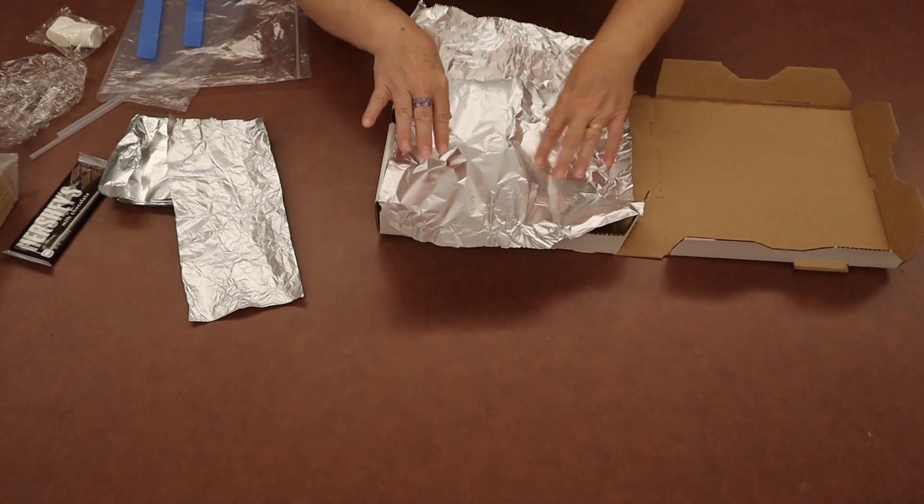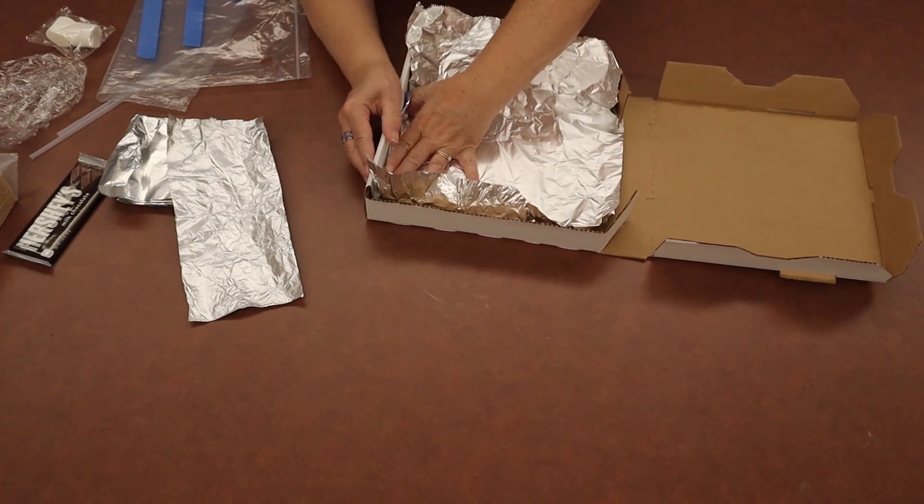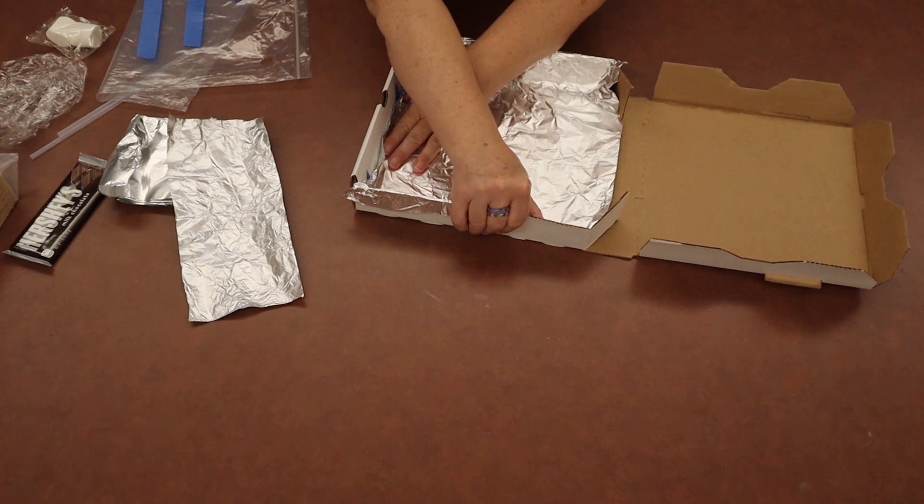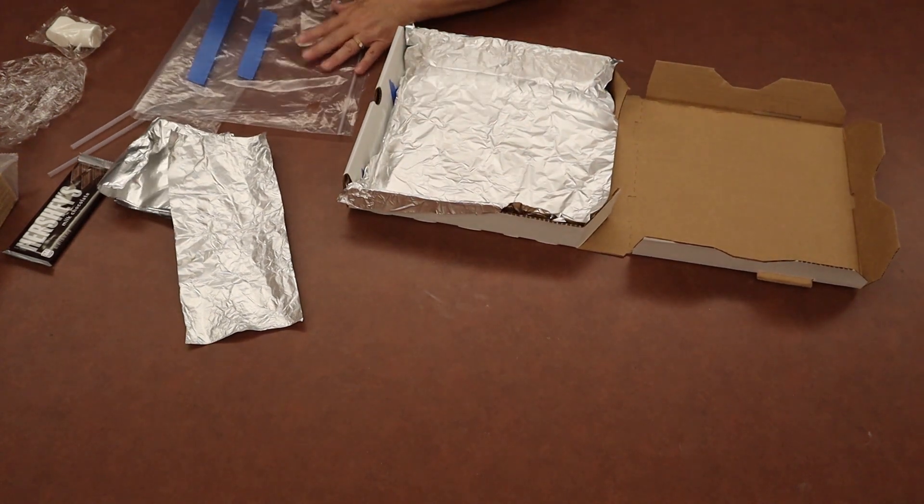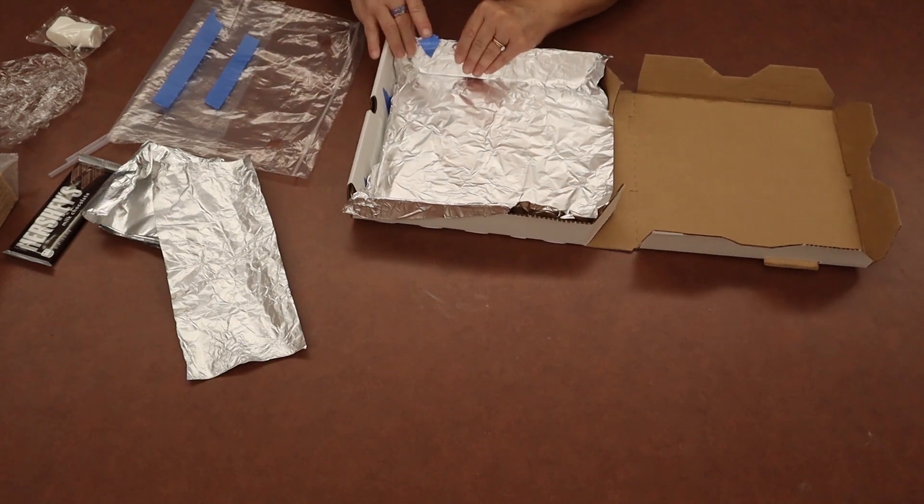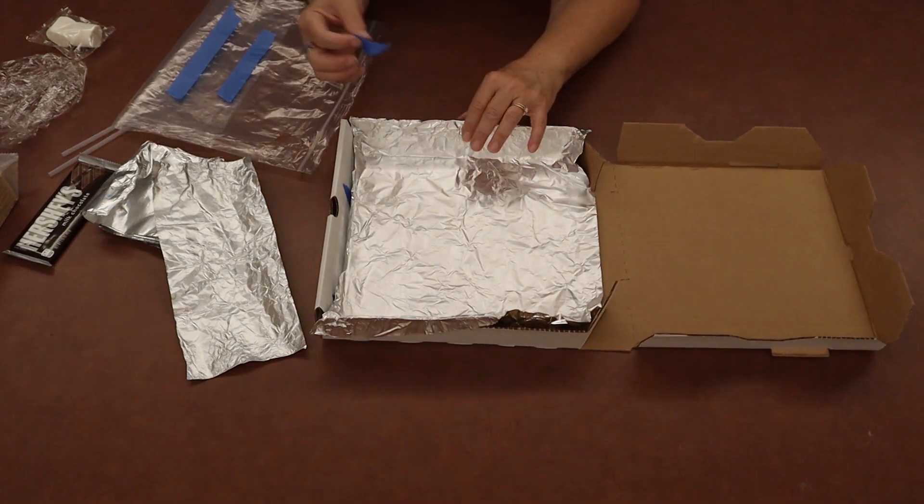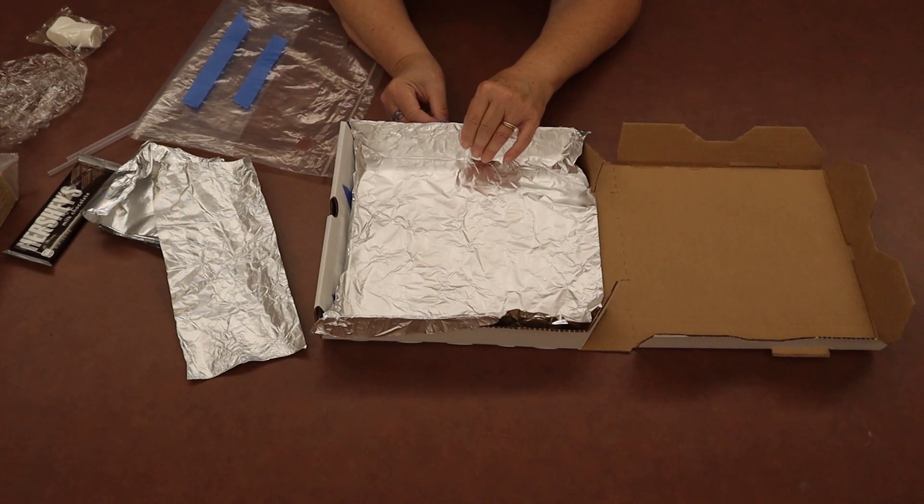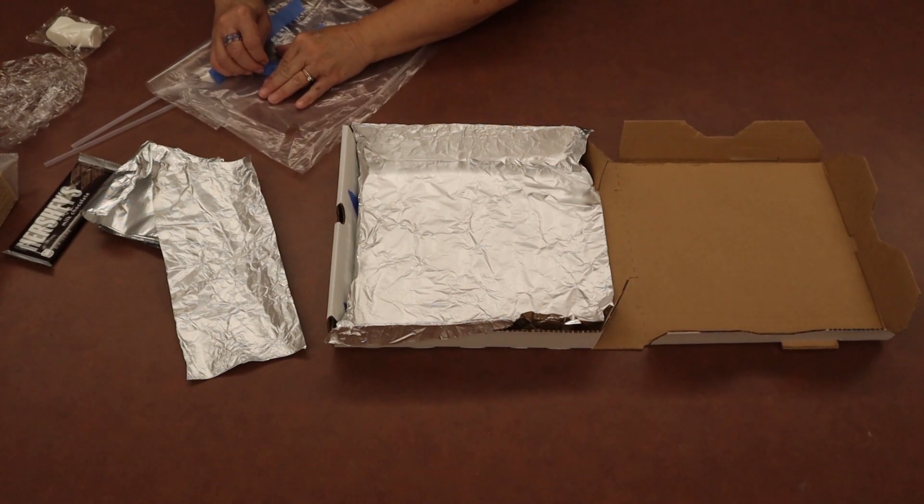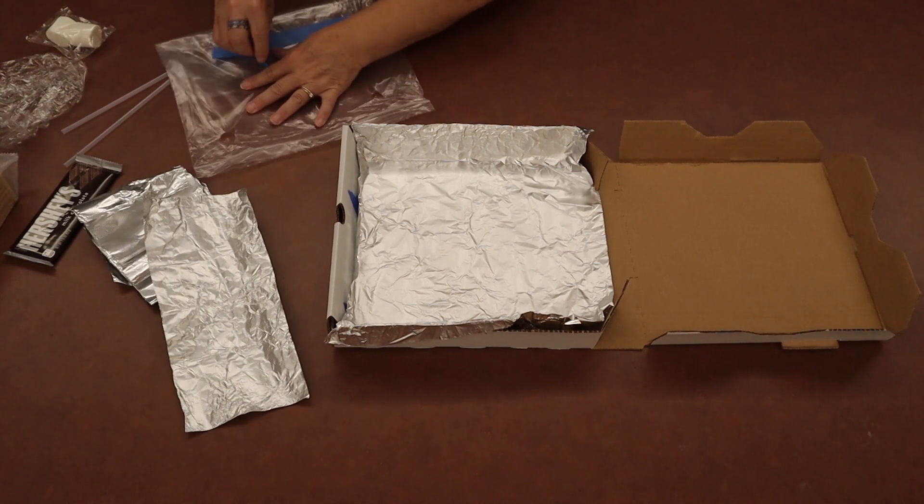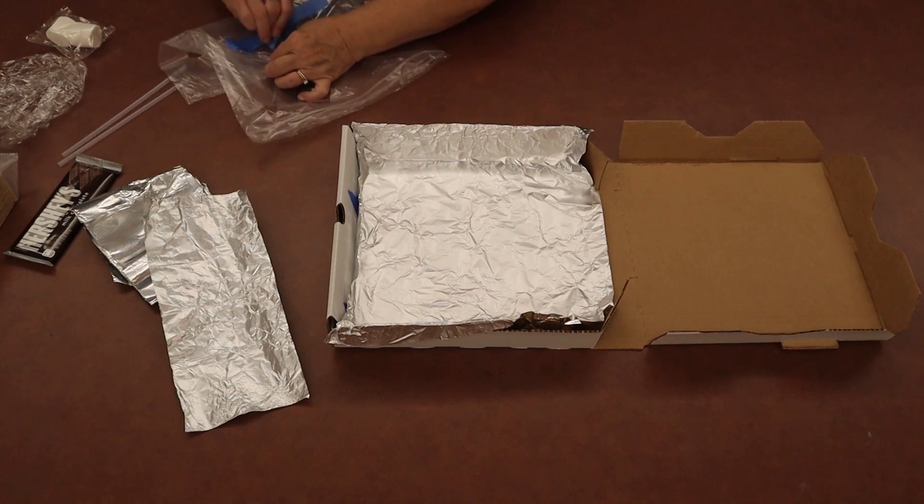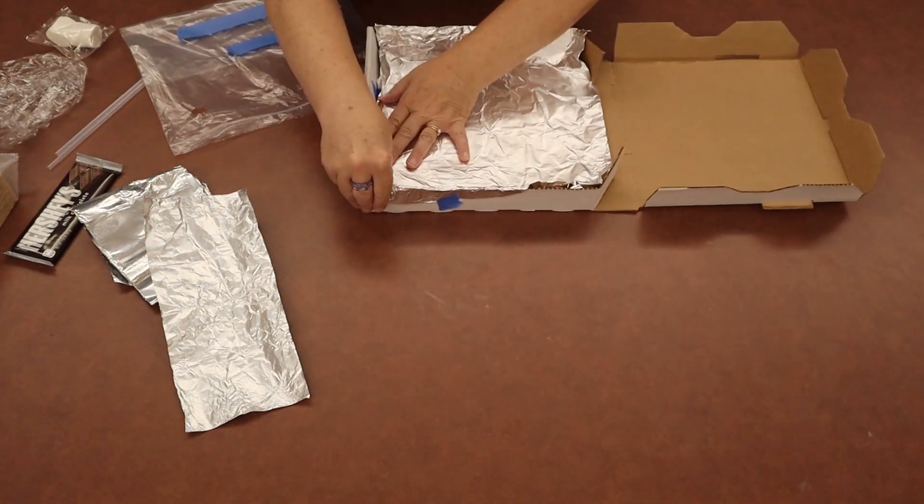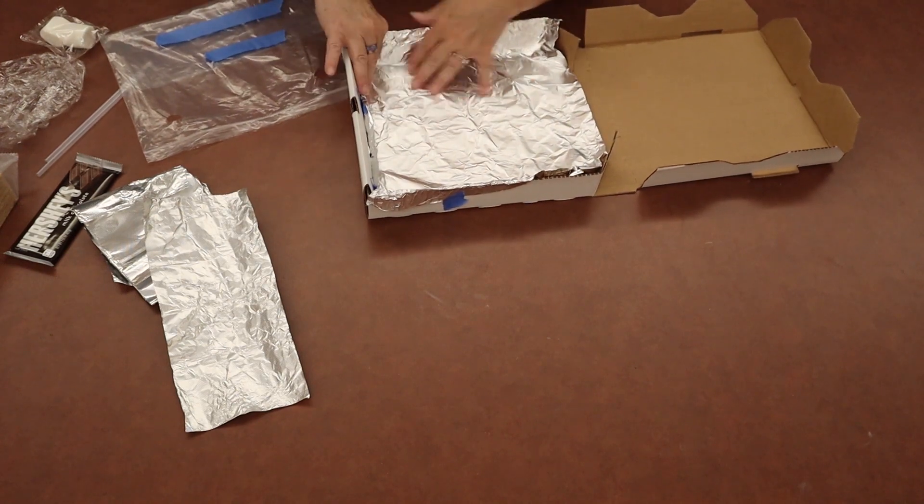If you have the longer strip of foil, just take it like this, kind of form it to your box, fold over the side. I would recommend that you do use a couple of pieces of tape to hold it on because if you take it outside and it's a little bit windy, the wind might catch your foil and blow it off your box. So just use a couple of small pieces of your tape and stick it on the outside like this to hold your foil in place. If you feel like you need a piece on the inside, feel free to do that as well.